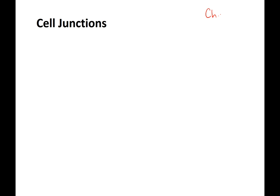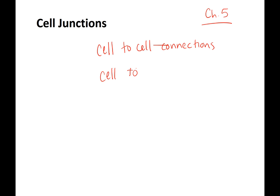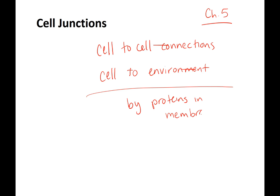This lecture goes along with chapter 5 and is about cell junctions — connections cell to cell and cell to environment. As with the theme of chapter 5, these are all mediated by proteins in the membrane. We'll talk about cell junctions in both animal and plant cells, and also what is outside the membrane: the extracellular matrix, which was important in chapter 4.